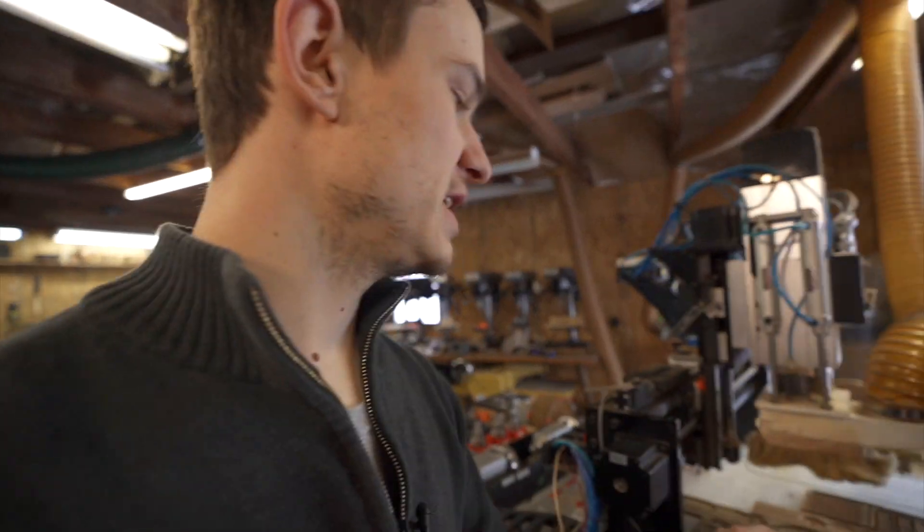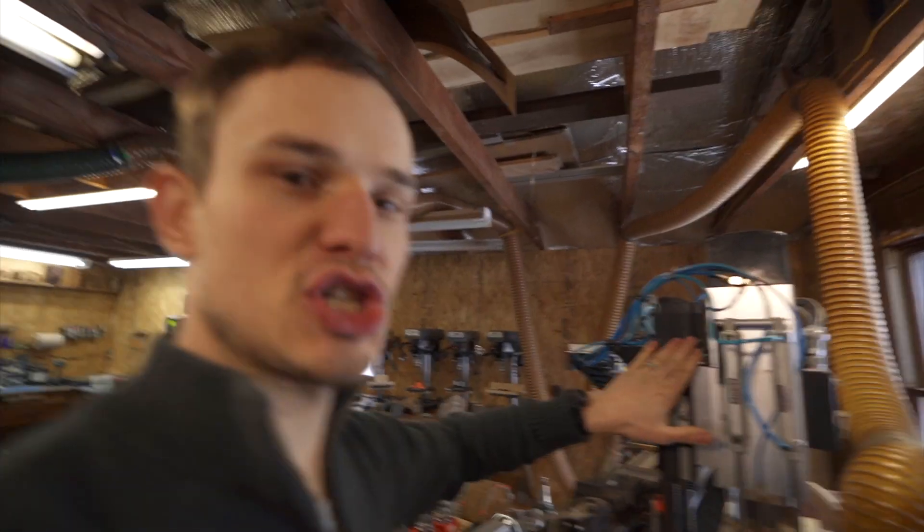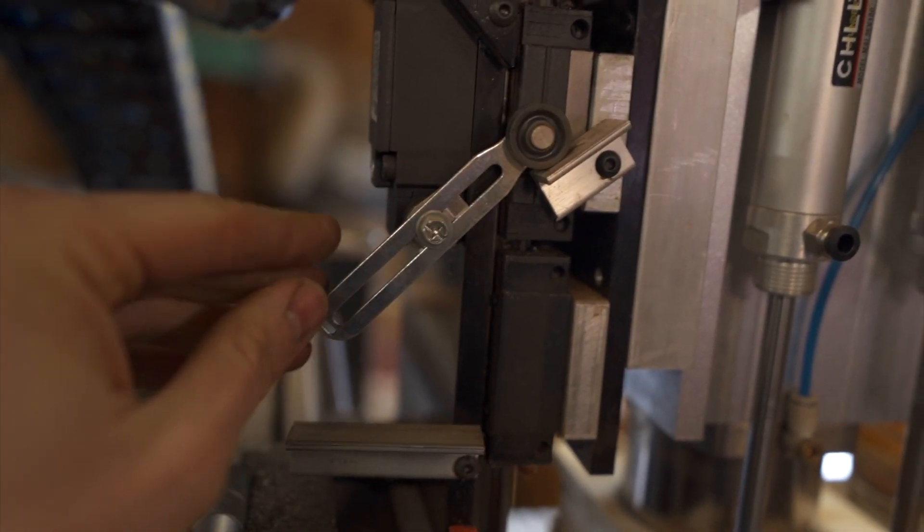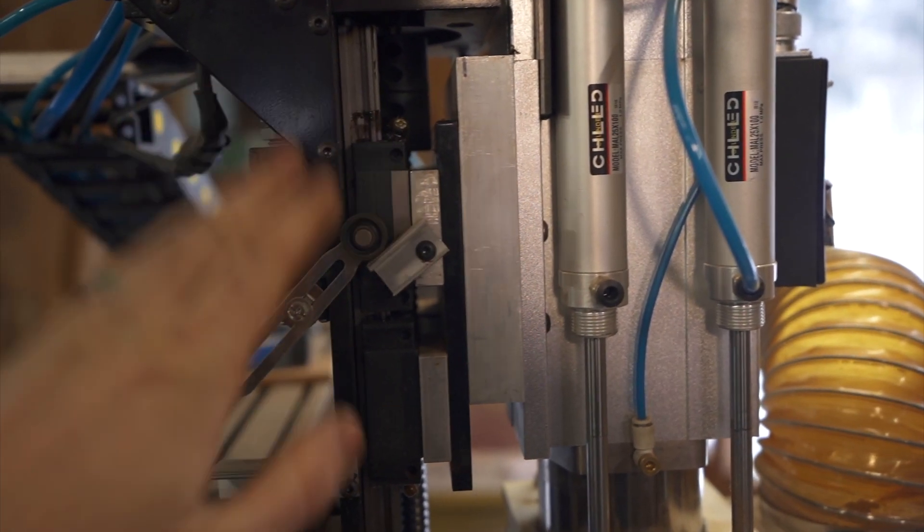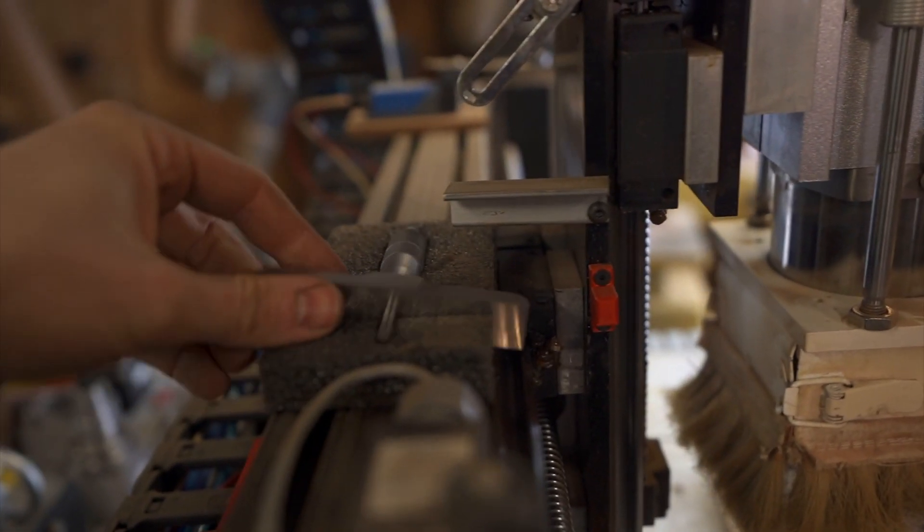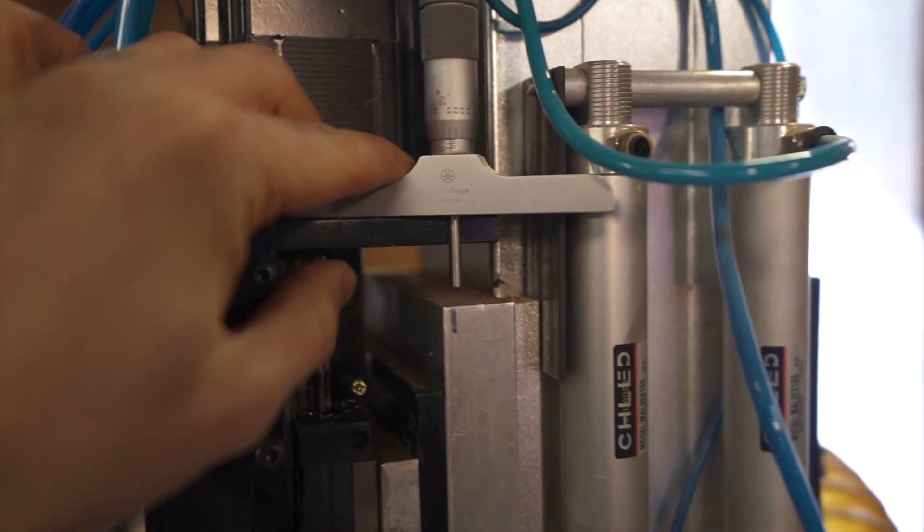So tip number three is use a micrometer depth gauge to set the height of the machine when it's homed. So basically, all CNC routers use these little flag switches to tell when the machine is homed. I find them not to be super accurate, so I just use a depth gauge like this. I set it right up on top of here, and then I measure in the thousands or even half thousands where my machine is.